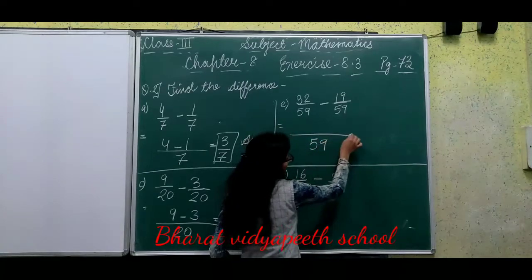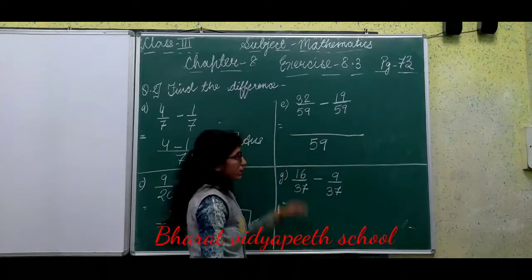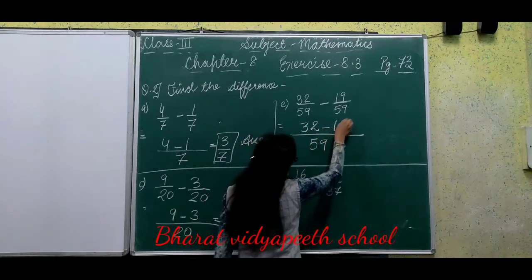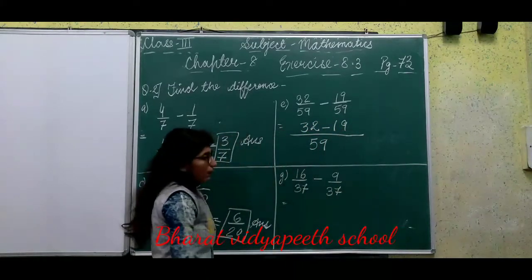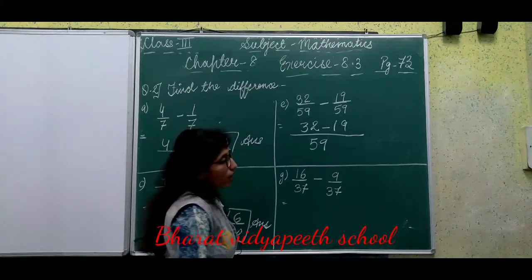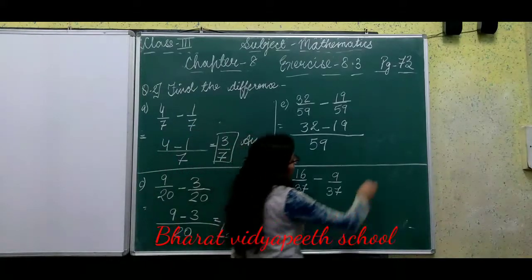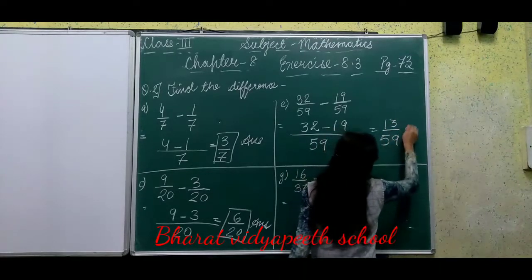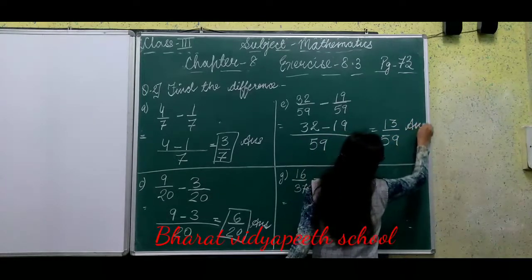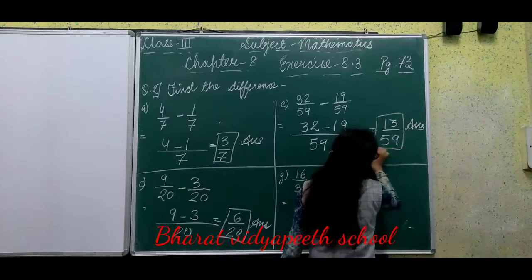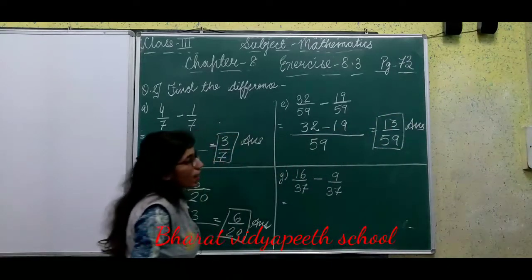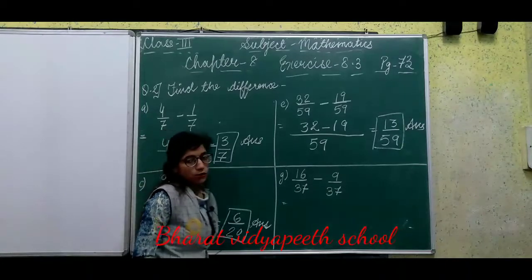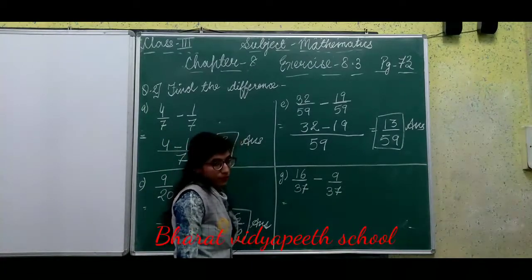Part E: 32 upon 59 minus 19 upon 59. Denominator 59 is written as it is. Now 32 minus 19 equals 13. So our answer is 13 upon 59. You also solve in your rough copy to verify.